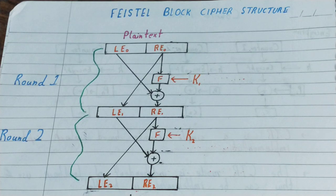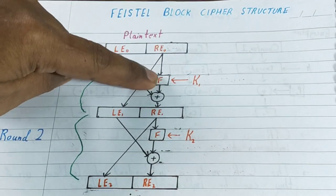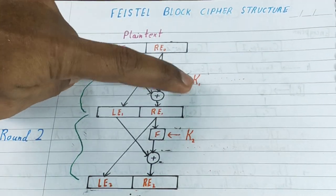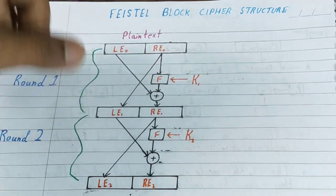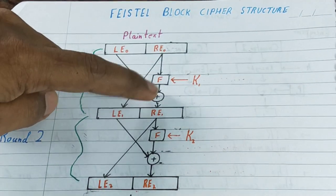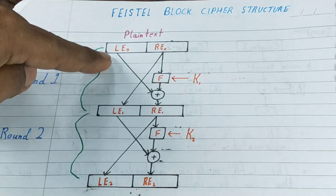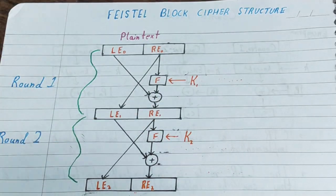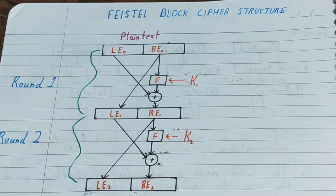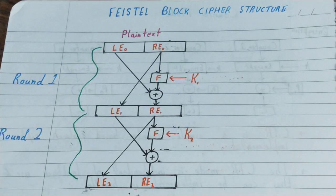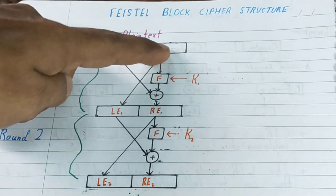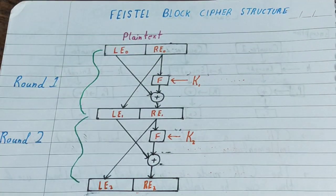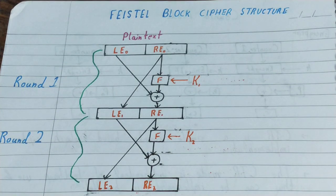What we do is R0, the right part, is passed through a function and a key K1 is used to encrypt it. Then it is XORed with the left part of the plaintext, and the result is kept as the right part of the next round. The original R0 is also sent directly as the left part of the next round. This is how you encrypt one round using Feistel block cipher structure.